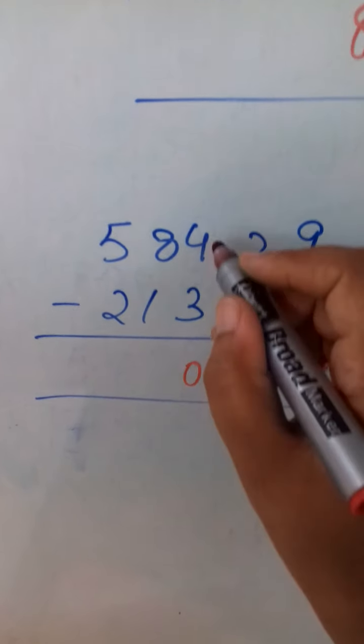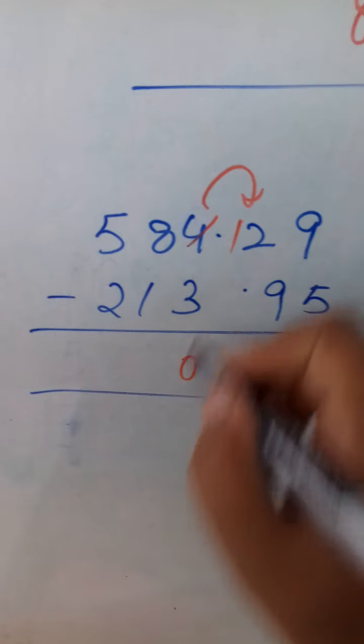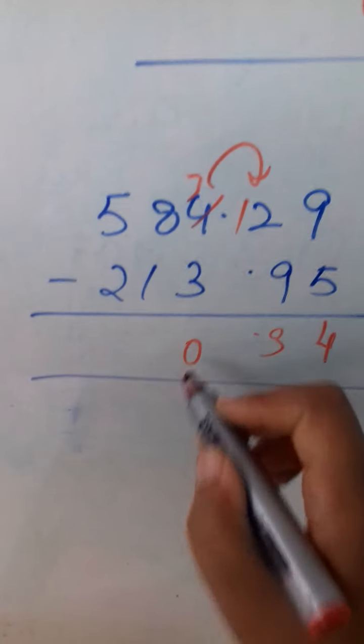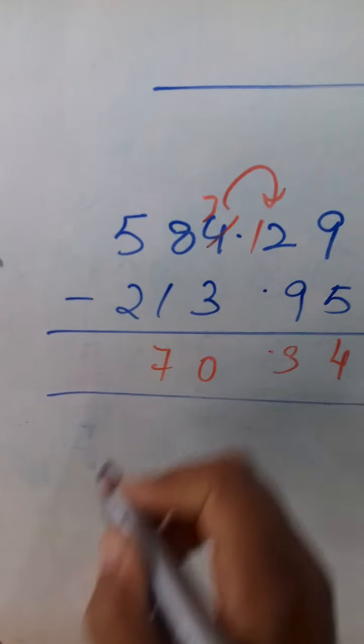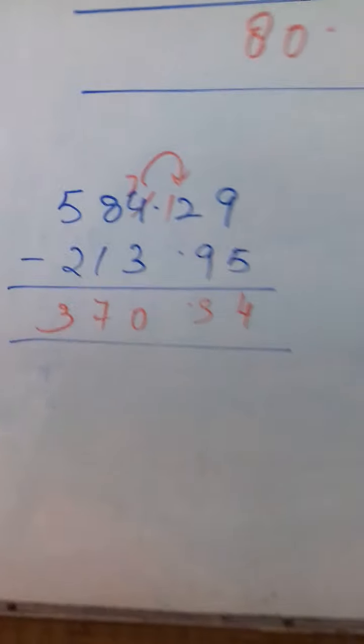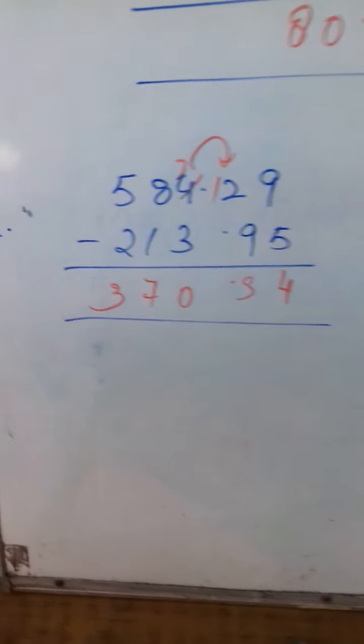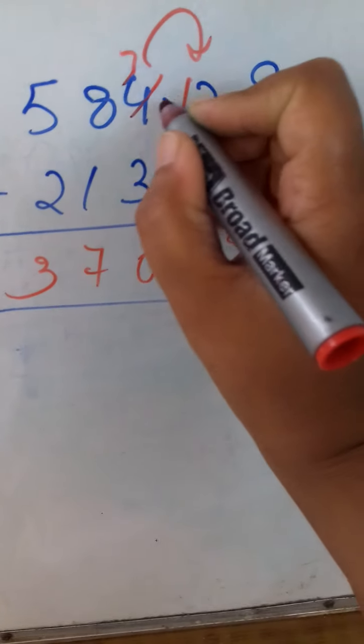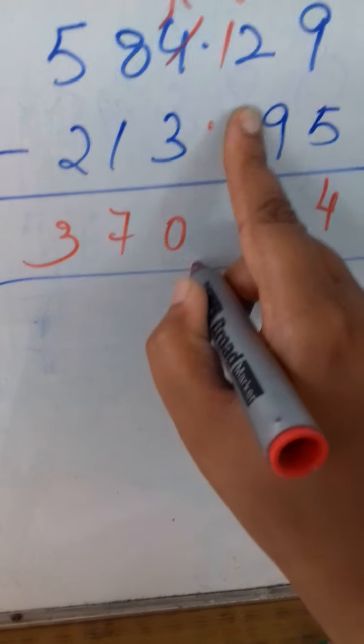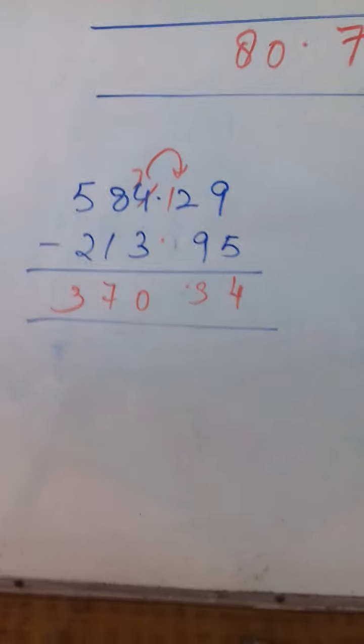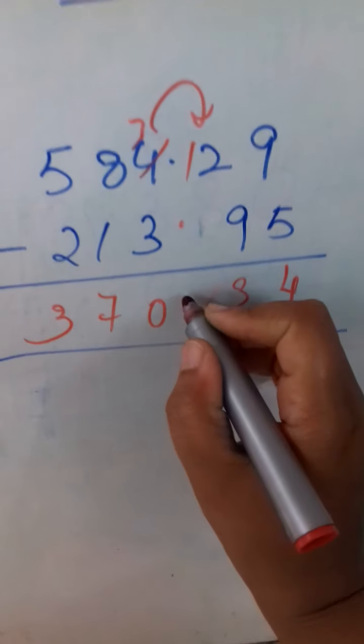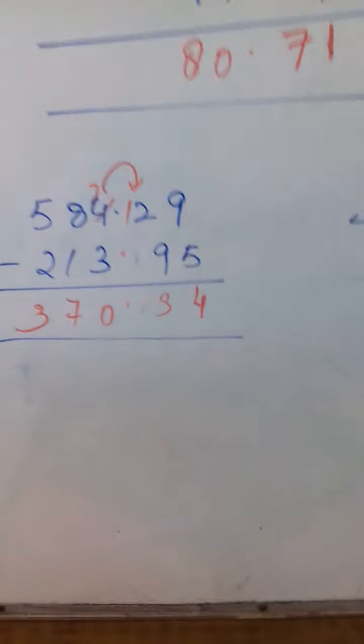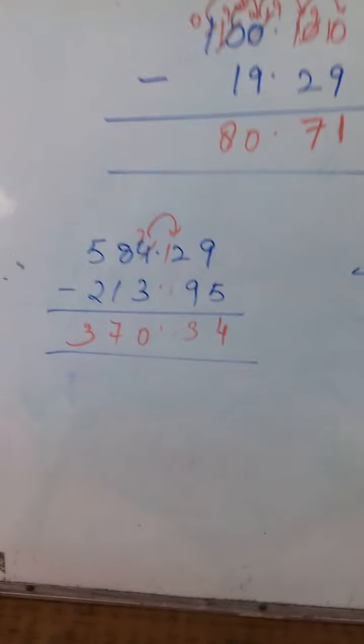3 minus 3 is 0. I hope you are getting it, because this has given one carry to this, so 3 is left. So 3 minus 3 is 0. 8 minus 1 is 7. And 5 minus 2 is 3. And decimal below the decimal. It should be very proper children. Sorry I made this mistake, but it should be very proper. 370.34 answer.